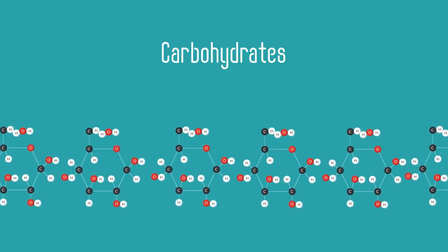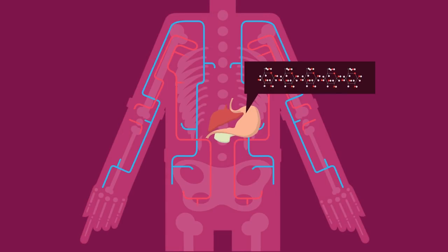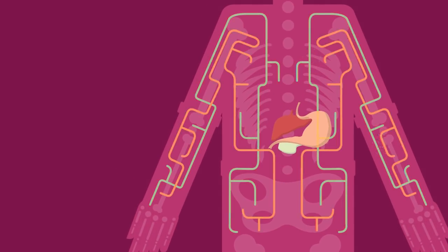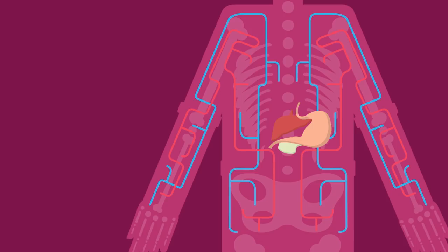During digestion this is broken apart into glucose which is absorbed into our bloodstream. This increased blood glucose level causes a gland known as the pancreas to secrete a hormone called insulin.